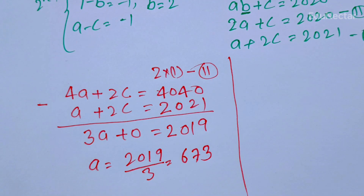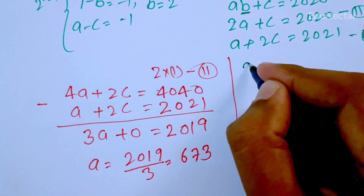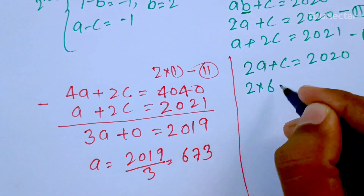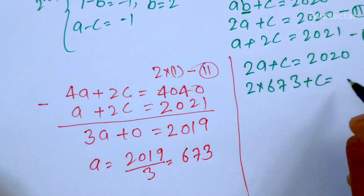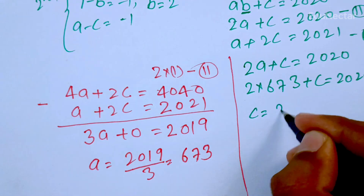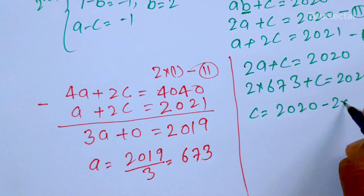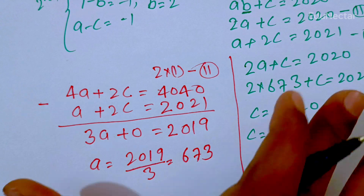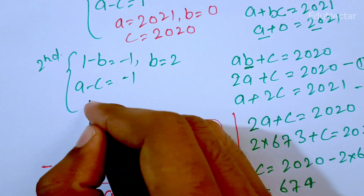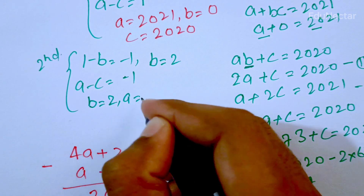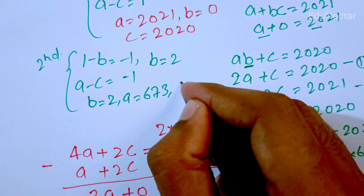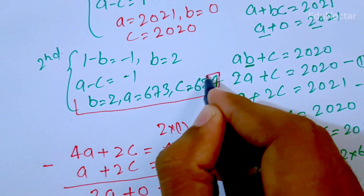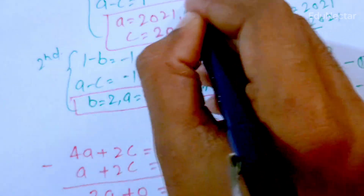I am going to put the value of a into one of the two equations. So: 2a plus c equals 2020, giving 2 times 673 plus c equals 2020, which gives c equals 2020 minus 1346 equals 674. From the second case, we get b equals 2, a equals 673, and c equals 674. This is our answer for the second case, and the first case gives a equals 2021, b equals 0, c equals 2020.